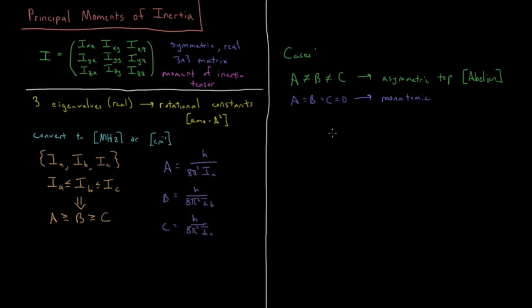If we have A equals B and C equals zero, only one of them is zero and two of them are equal, then that's the case for a linear molecule. From symmetry and group theory that would be point groups like C∞V or D∞H.